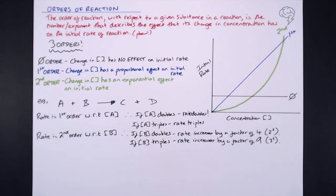Zero order: it doesn't matter what the concentration of that reagent is. As long as it's there, it's not going to have an effect on the actual rate of reaction. You do need to have some of it there for the reaction to happen, but the concentration of it doesn't affect how quickly the reaction happens. So there's our zero, first and second order.